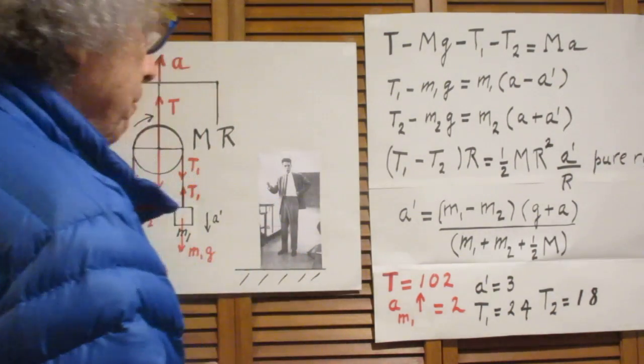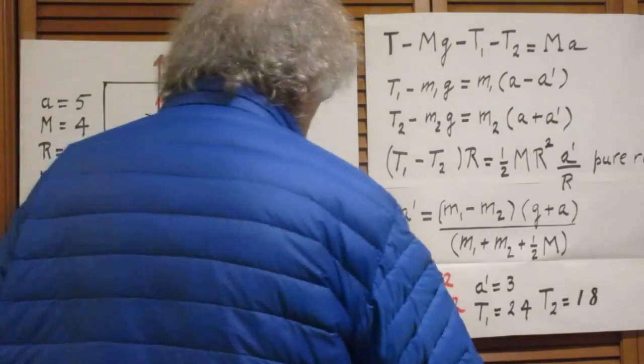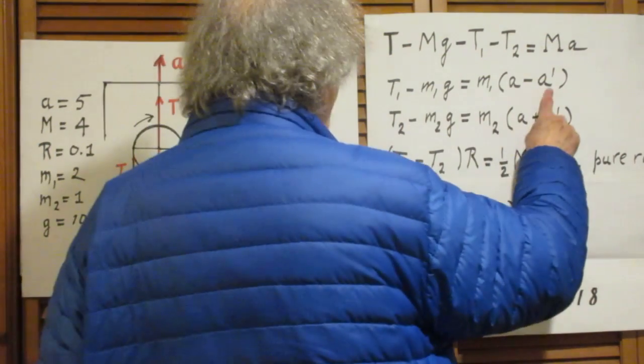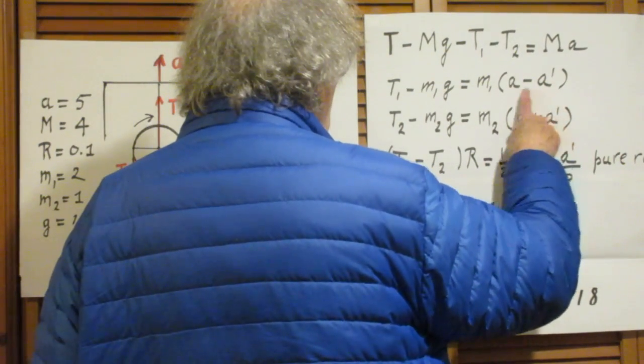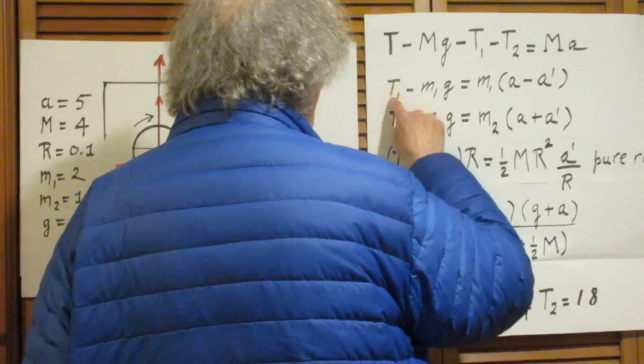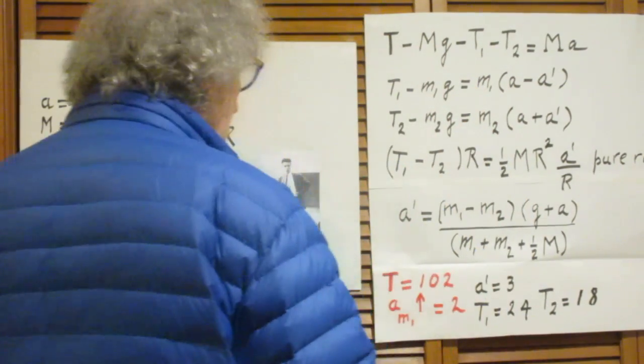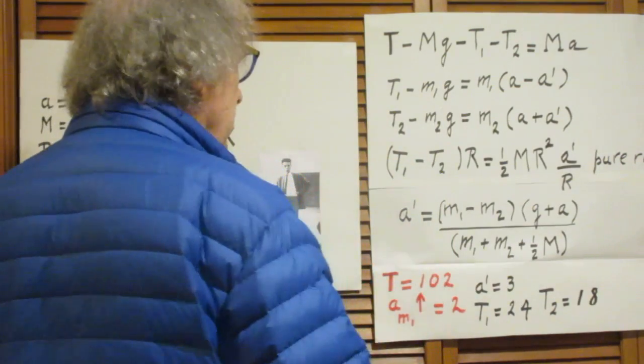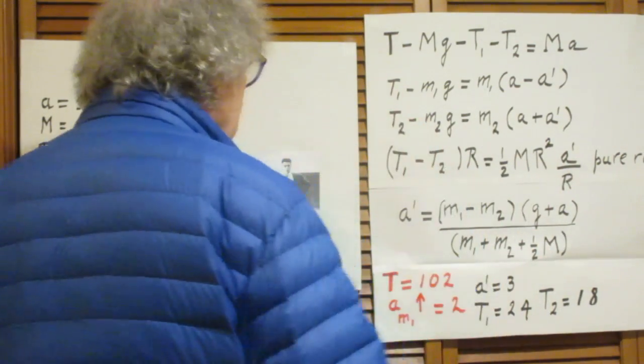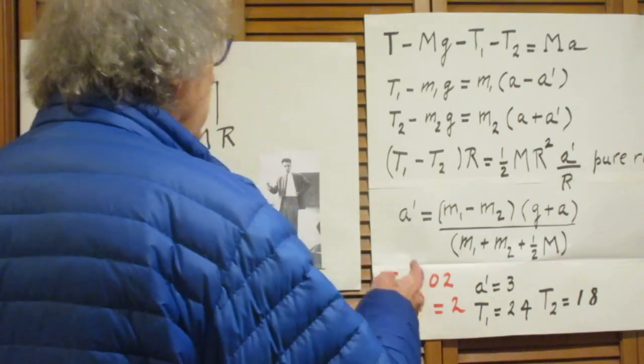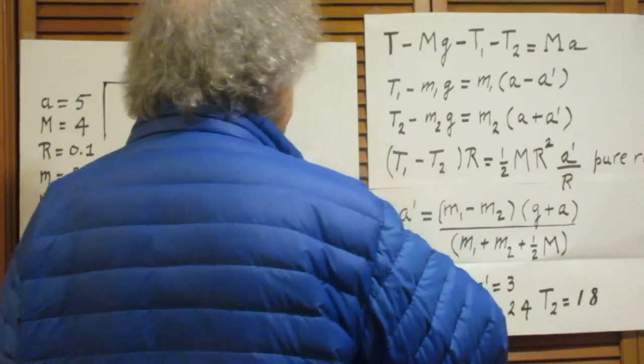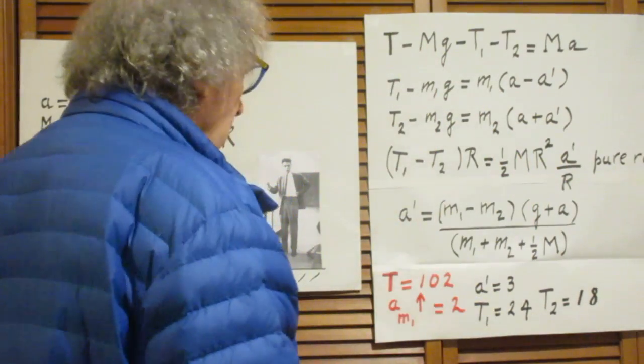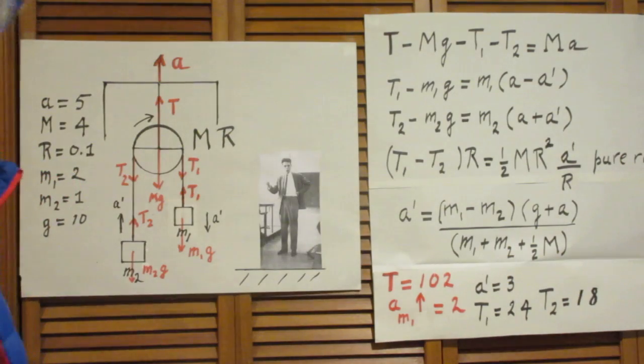Once you have a prime, it is trivial to calculate T1, because if you go to this equation you now know a prime, you already knew a and m1, and so you immediately find T1. That's why I only gave you this equation. And the same is true for T2. The moment you have a prime, you find immediately T2. And the moment that you find T1 minus T2, you find with this equation immediately T. So this is really at the heart of the problem.